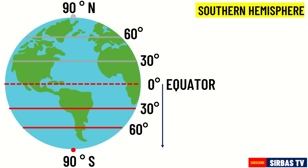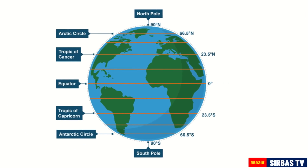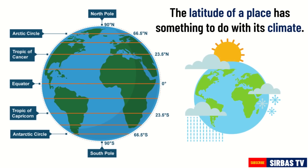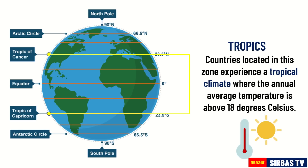The notable latitudes are shown in the picture and they are given special names. The latitude of a place has something to do with its climate. The part of the world between the Tropic of Cancer and the Tropic of Capricorn is called the Tropics. Countries located in this zone experience a tropical climate where the annual average temperature is above 18 degrees Celsius. This is the reason why the Philippines is a tropical country — we experience warm temperatures.